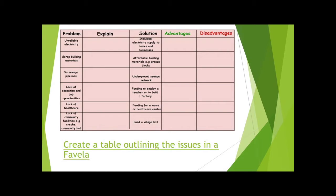To look at our first two objectives, we've got a list of problems and a list of solutions. In our favelas we have unreliable electricity, scrap building materials, no sewage pipelines, lack of education and job opportunities, lack of healthcare, and lack of community facilities like a creche or community hall. We've got a list of solutions on how this would help them redevelop and become a better place to live, improving an individual's quality of life.